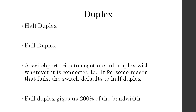A switch port tries to negotiate full duplex with whatever it connects to — that's the default. By default the switch port is set to auto-configuration and automatically tries to do full duplex. If something happens and packets are dropped or the signal is interrupted, or the NIC card doesn't quite negotiate correctly, the switch will then default to half duplex — making you prone to collisions and duplex mismatches.